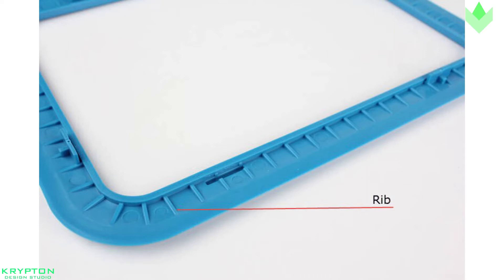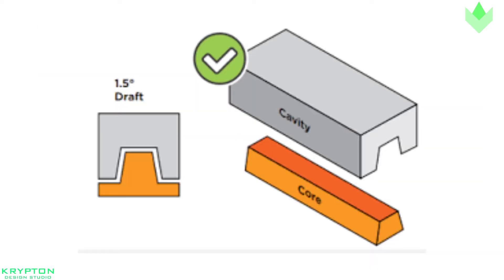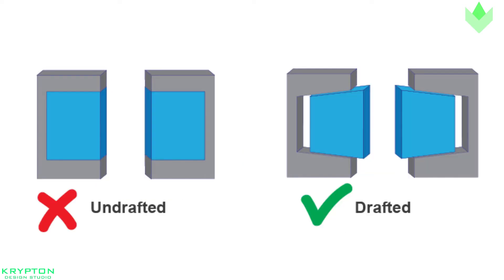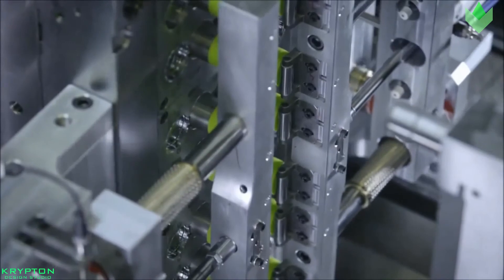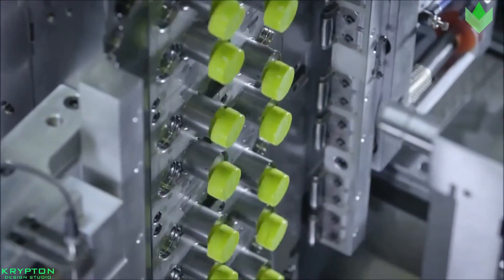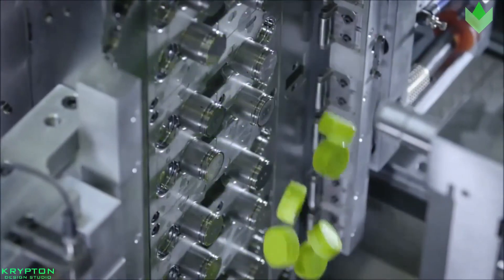To properly release the part when the mold opens, the side walls of the mold are tapered in the direction that the mold opens. This tapering is referred to as draft in the line of draw. This draft allows the part to break free of the mold as soon as the mold opens.